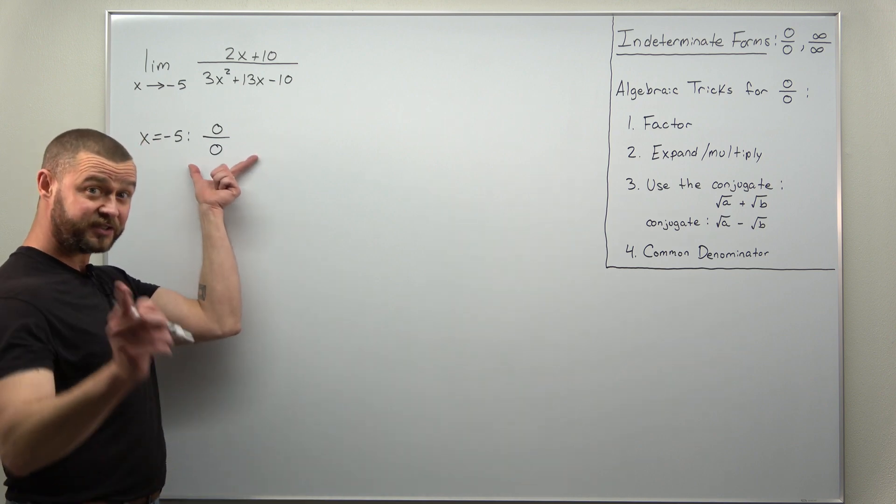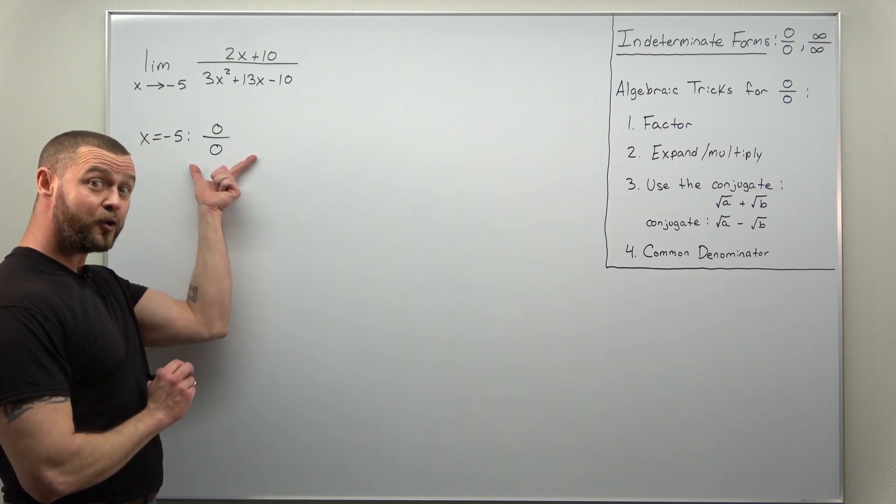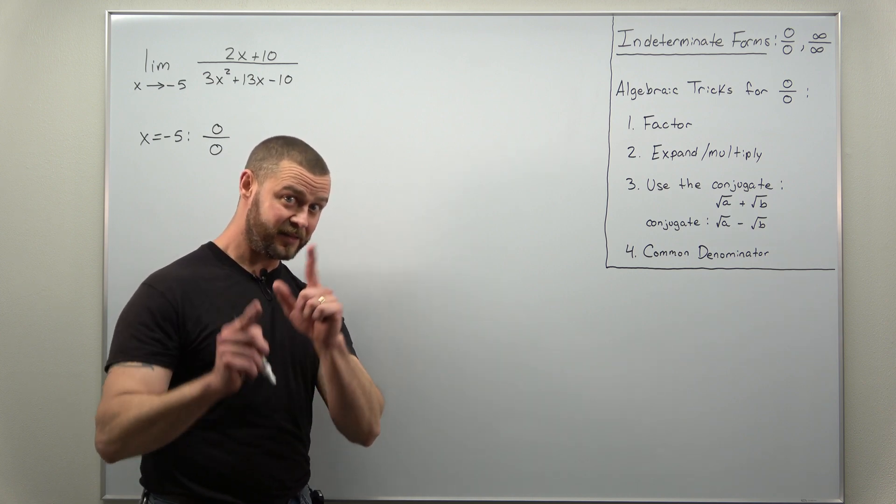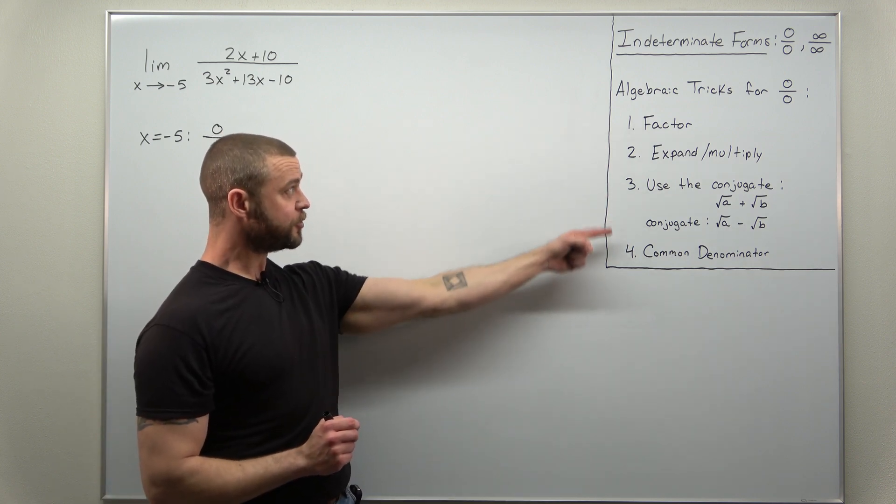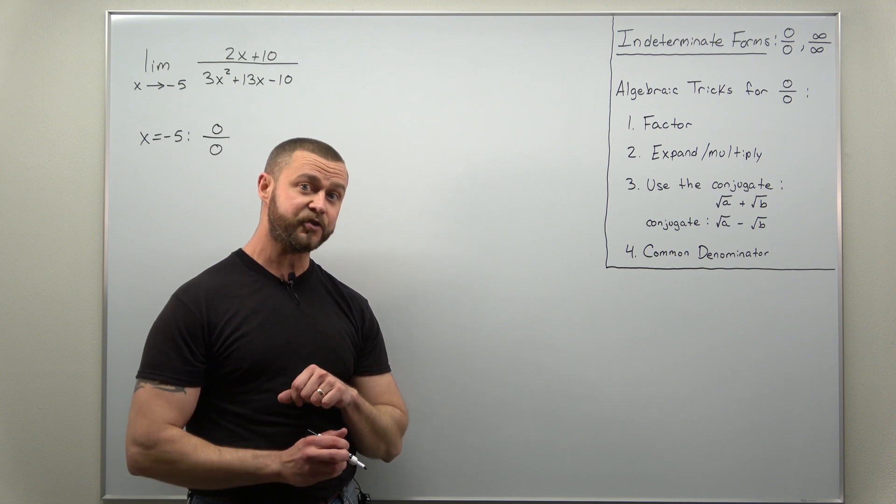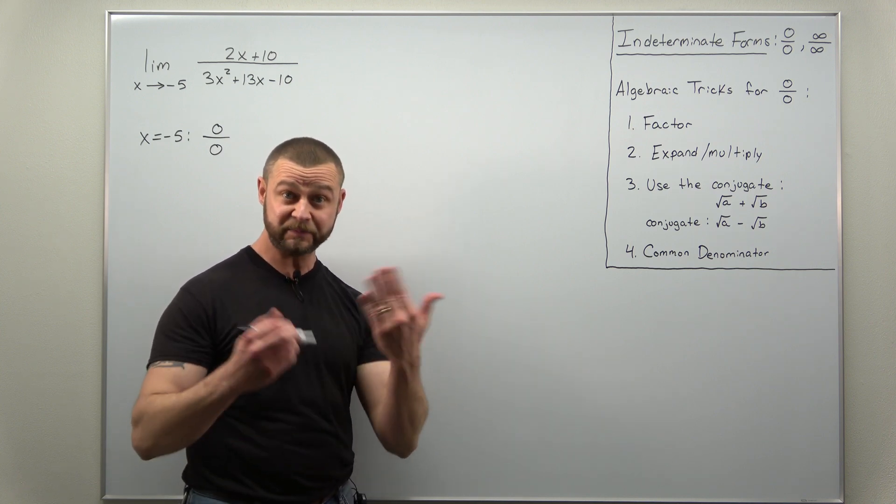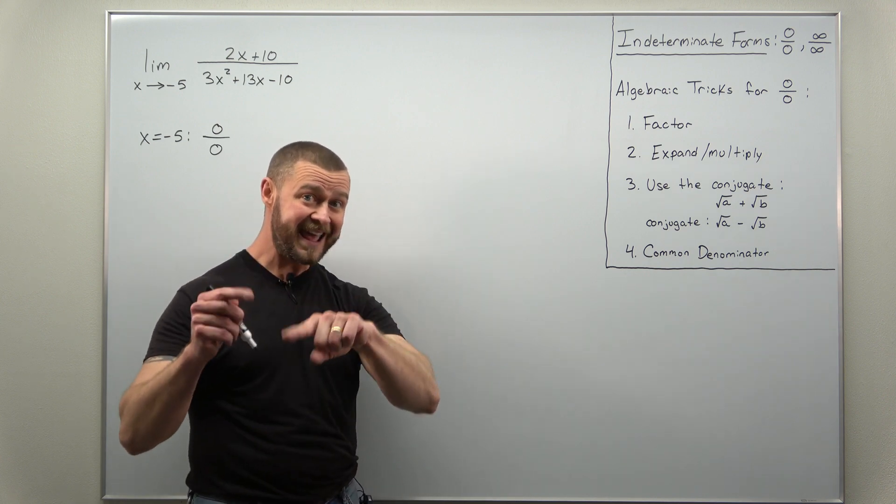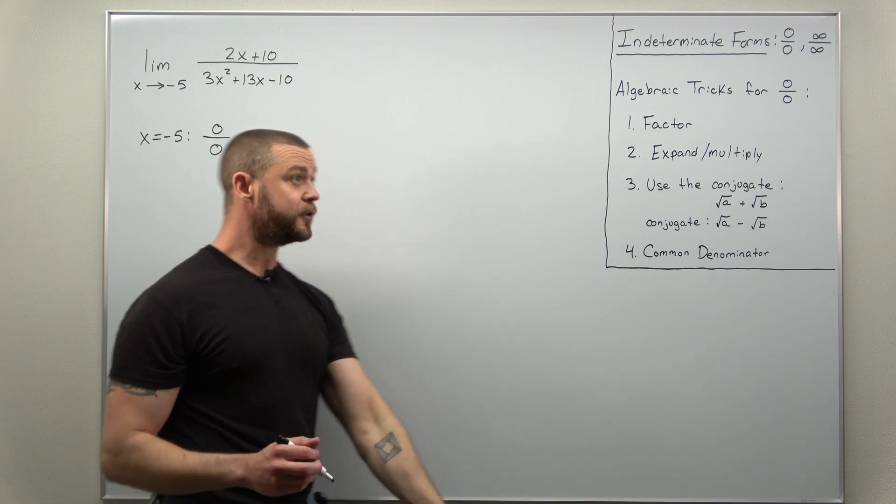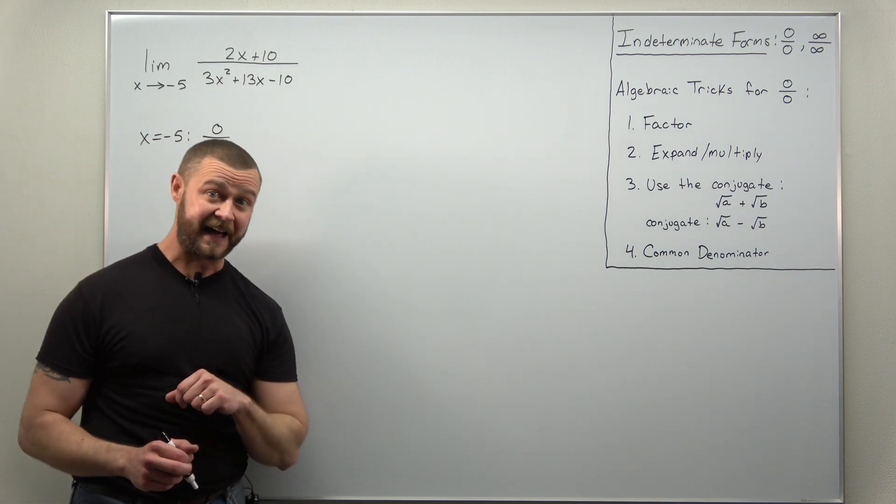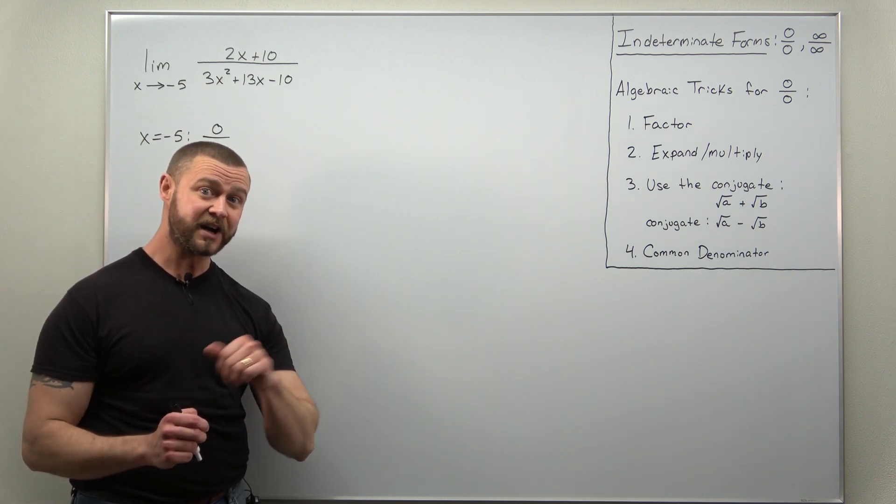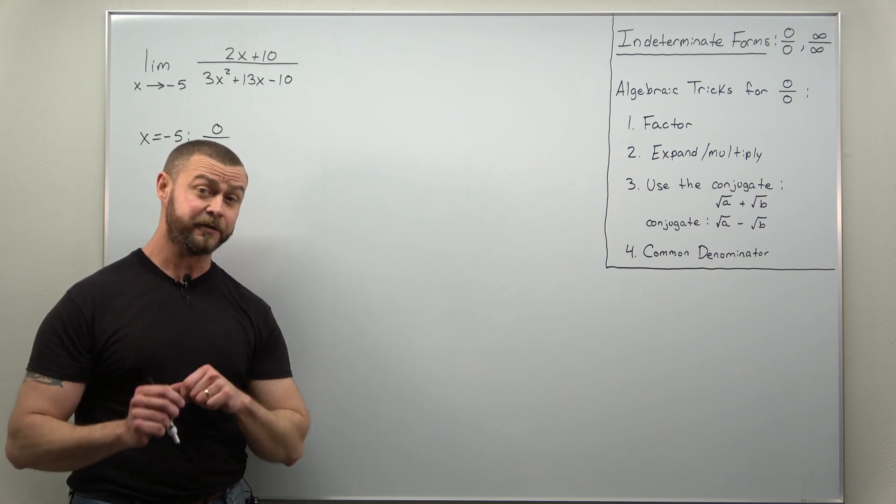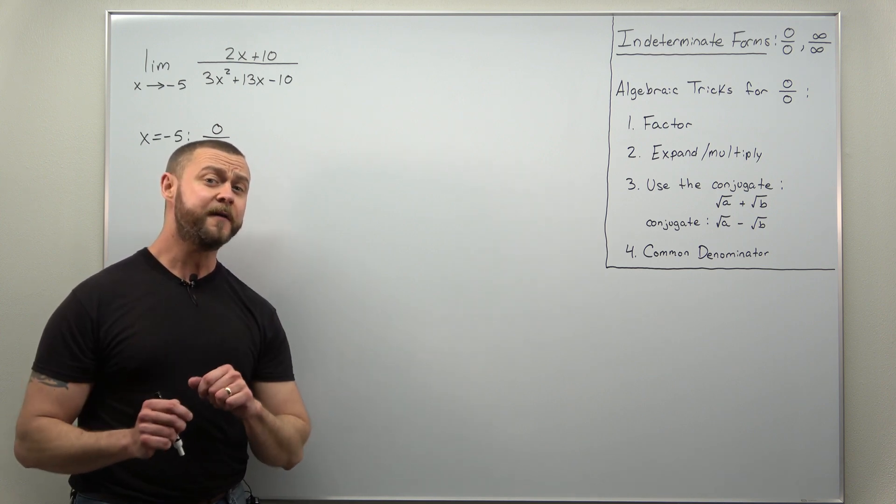Now what this suggests, the indeterminate form of type 0 over 0, is that we can possibly try to eliminate the indeterminate form by going through one of our four standard algebraic tricks. The one that seems to apply here, we're going to try to factor both the numerator and denominator. Now the numerator is really easy to factor. You can just pull out the greatest common factor which is 2. It's going to be a little bit more work to factor the denominator which is where we're going to focus our time.